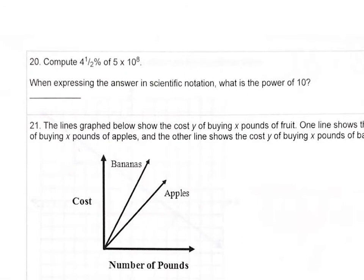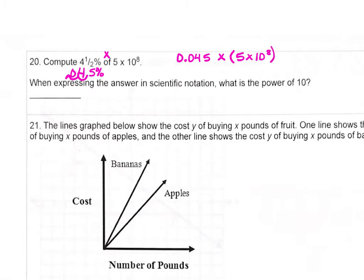Number 20: we're computing 4.5% of 5 times 10 to the 8th power. I change 4.5% to a decimal: 0.045, moving the decimal two places left. Then 0.045 times (5 times 10 to the 8th). In scientific notation I get 2.25 times 10 to the 7th power. The question asks for the power of 10 when expressing the answer in scientific notation — it's 7.